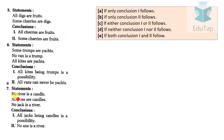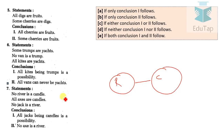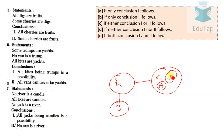Question 7: No river is candle. All axes are candles. Conclusion 1 says all jack being candles is a possibility — jack can be placed within candle, so this is true. Conclusion 2 says no axe is river — since all axes are candles and no candle can be river, no axe can be river. Both conclusions follow, so the answer for question 7 is option E.